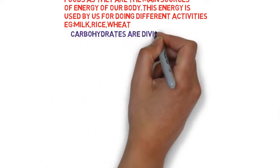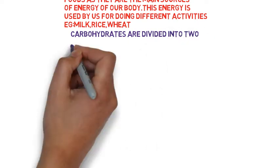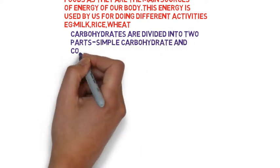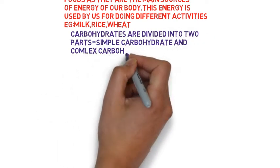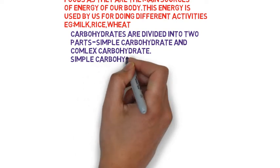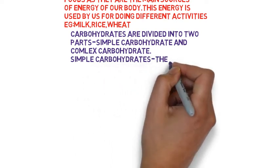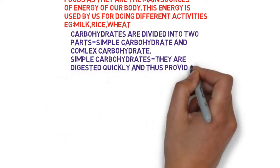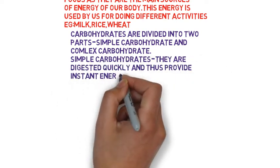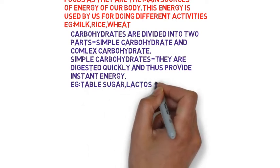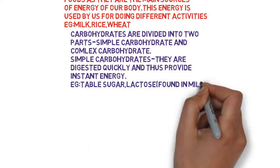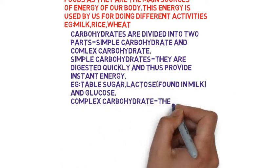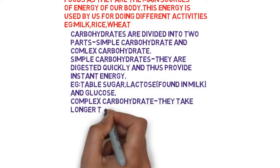Carbohydrates are divided into two types: simple carbohydrates and complex carbohydrates. Simple carbohydrates are digested quickly and thus provide instant energy. For example, double sugar, lactose found in milk, and glucose.